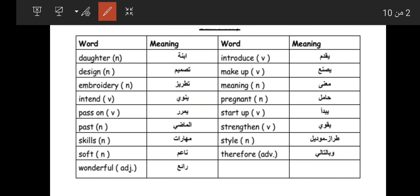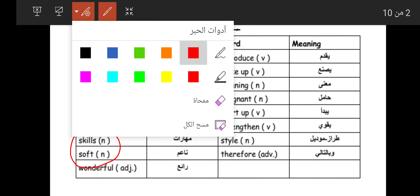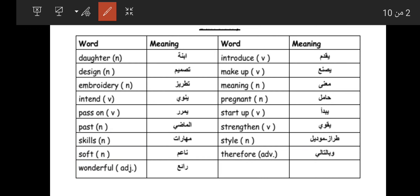'Skills' means مهارات. 'Soft' means ناعم, and 'soft skills' means المهارات الحياتية. 'Wonderful' means رائع and has several synonyms: great, fantastic, fascinating, exciting, amazing, cool, excellent, perfect — all meaning wonderful.